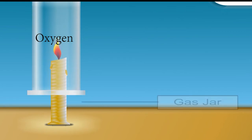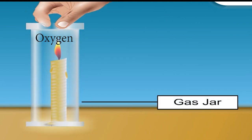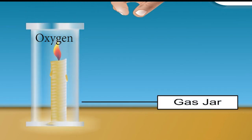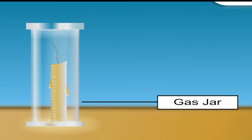The lit candle stops burning a few seconds after the gas jar is placed over it. Which gas in the air is used during combustion? The answer is oxygen. When all the oxygen inside the jar is used up during combustion, the candle is extinguished.